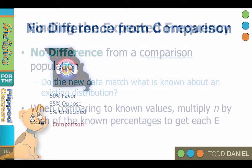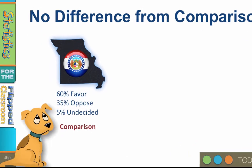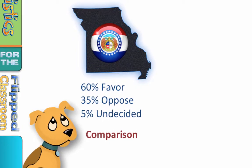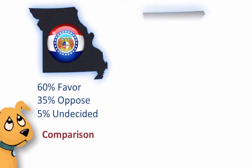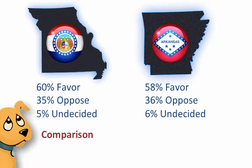Let me illustrate. Suppose you know that 60% of Missouri residents favor outlawing puppy mills, 35% oppose the policy, and 5% are undecided. You want to compare opinions in Arkansas and Iowa. Missouri is our known value, our comparison population. In this case, the expected values would be 60%, 35%, and 5% respectively. When we survey the people in Arkansas, we find that 58% favor, 36% oppose, and 6% are undecided.